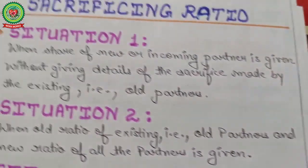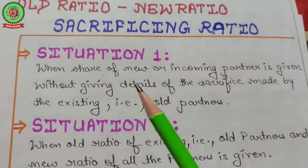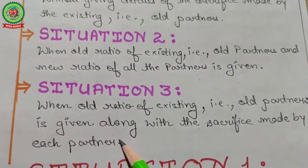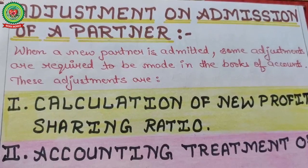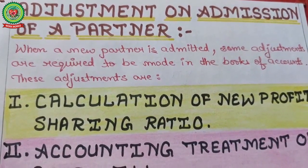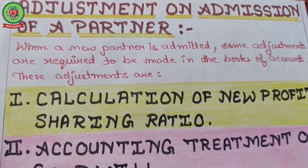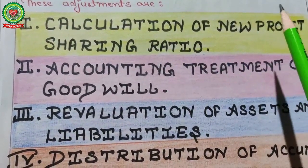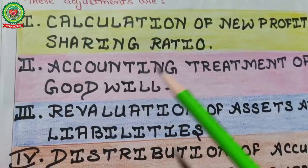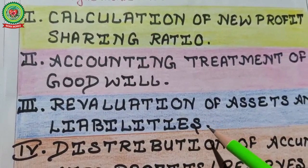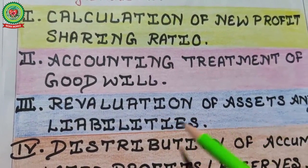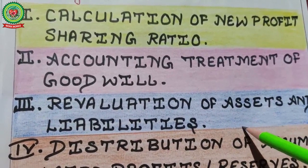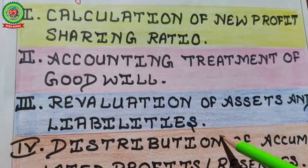In the previous lecture, I discussed sacrificing ratio across three situations: first, when no detail regarding the sacrifice is given; second, when old and new ratio are given; and third, when the sacrifice made is given. Some adjustments are required in the books of accounts when a new partner is admitted. Adjustment one — new profit sharing ratio — and accounting treatment of goodwill are already done. Today's topic is revaluation of assets and liabilities.